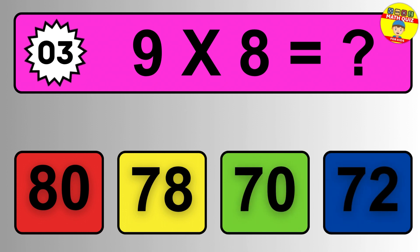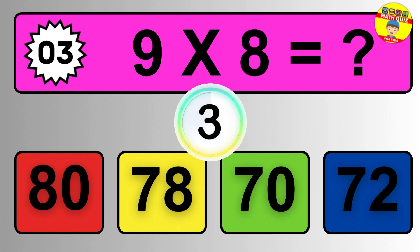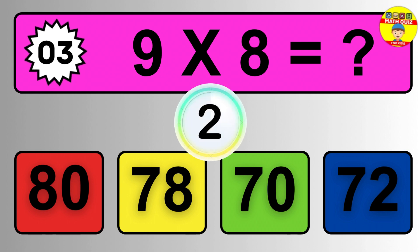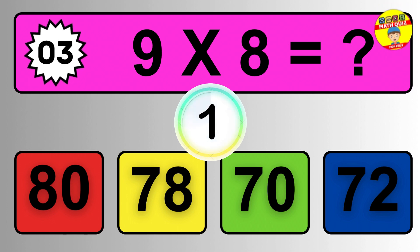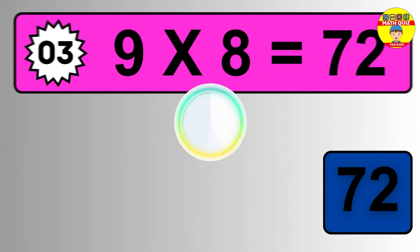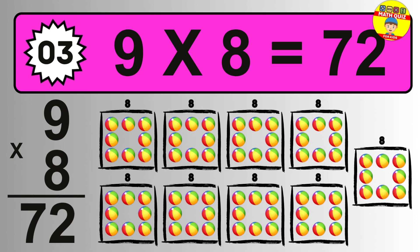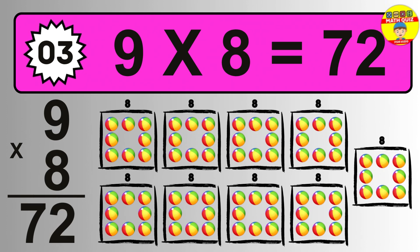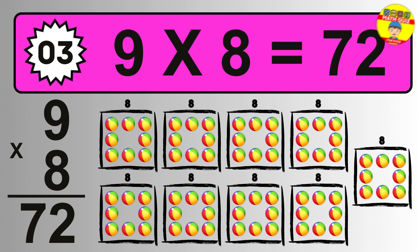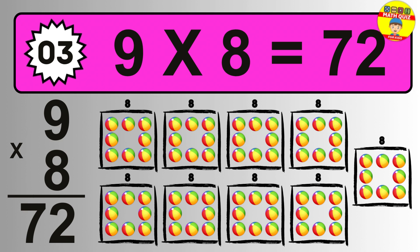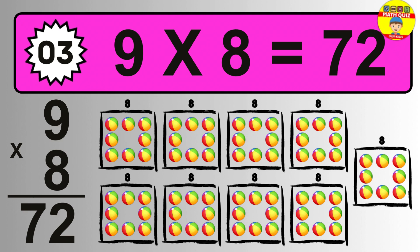Question three: nine times eight equals what? The answer is nine times eight is seventy-two. To calculate, we have nine groups with eight balls each. So how many balls do we have? Seventy-two balls.